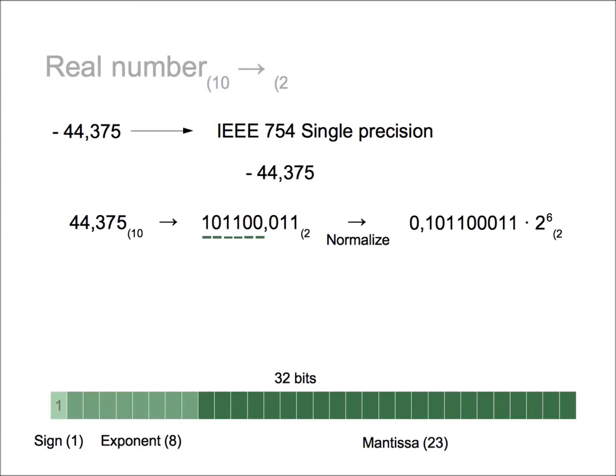But we want to use the IEEE format. And in this format, to normalize, the comma has to be on the right of the MSB. So the binary number normalized changes a little bit because we have to multiply by 2 raised by 5.